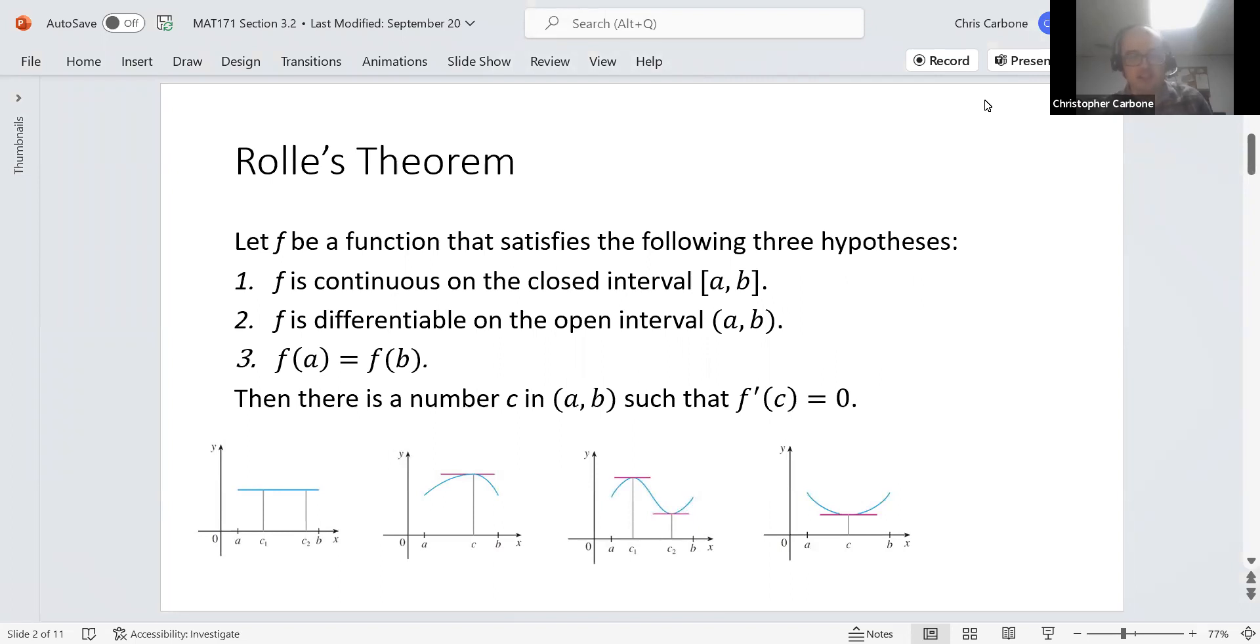This is a function that satisfies these three hypotheses. F is continuous on a closed interval A to B. F is differentiable on the open interval A to B. And F of A is equal to F of B. Then there is a number C in the open interval A, B, such that F prime of C is equal to zero.